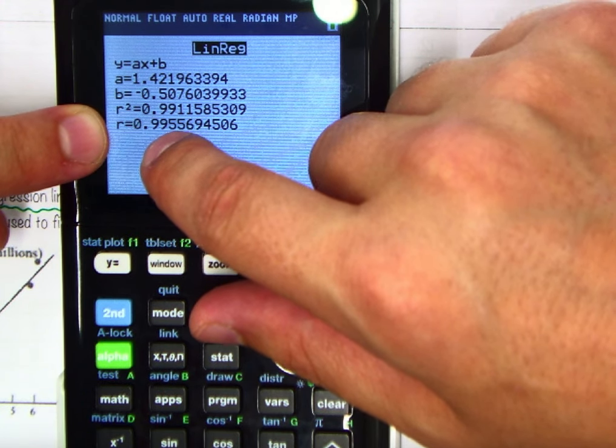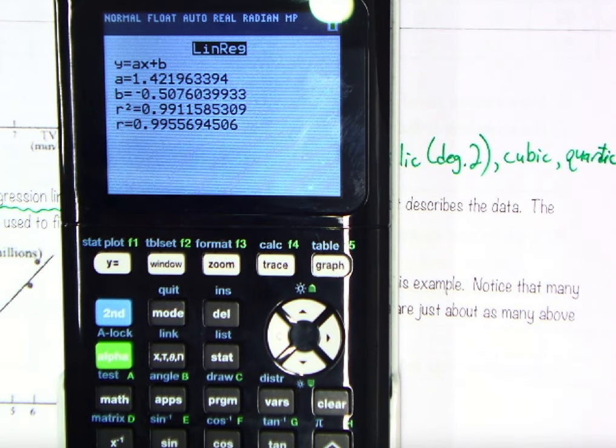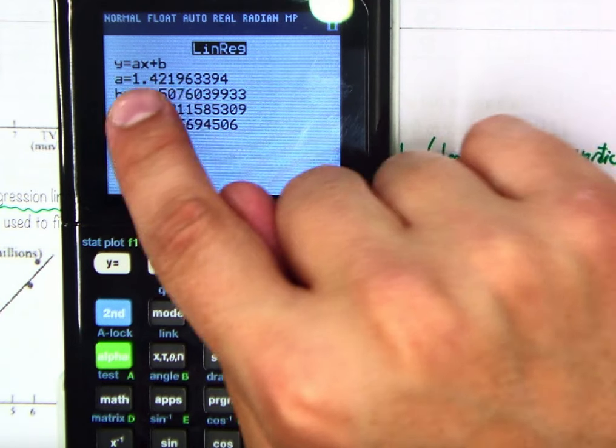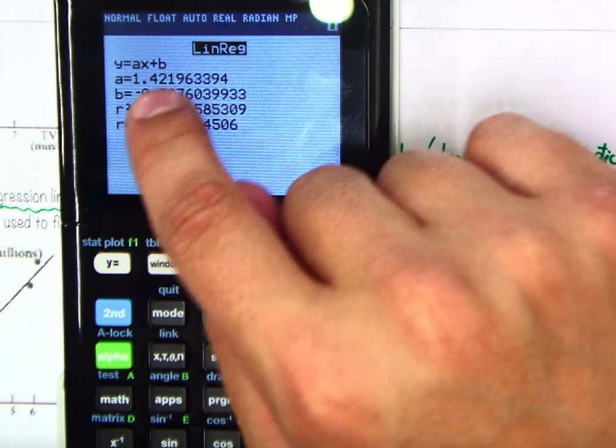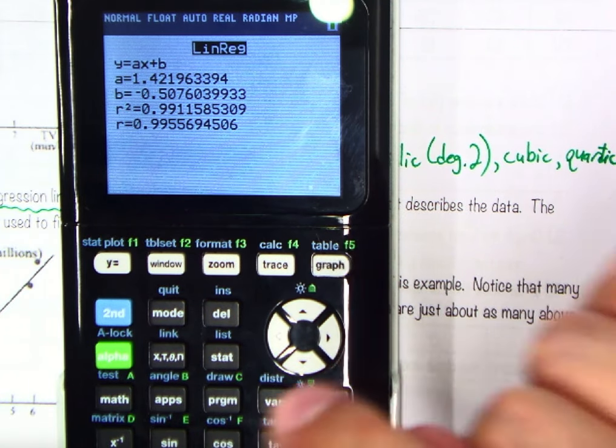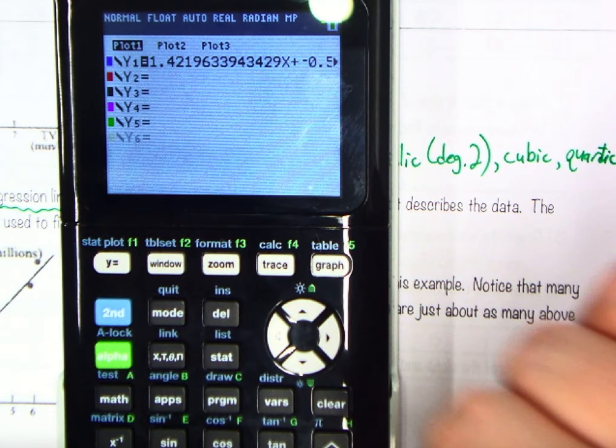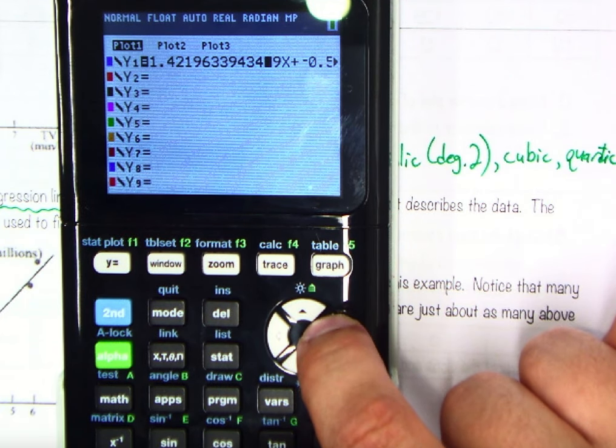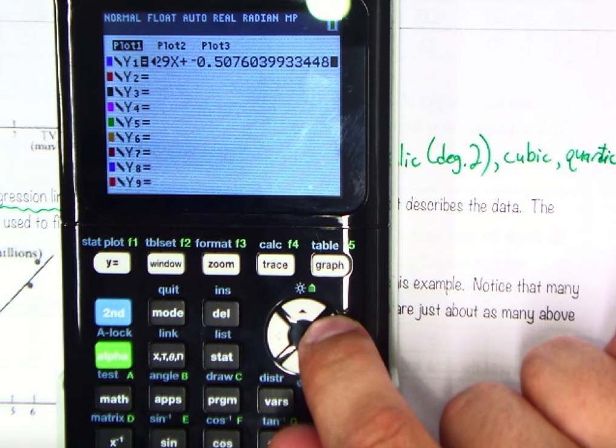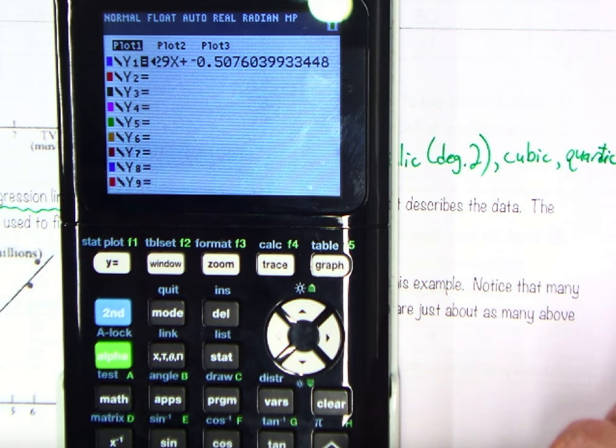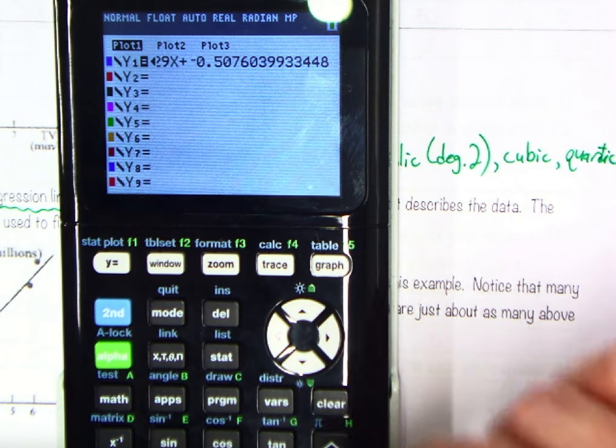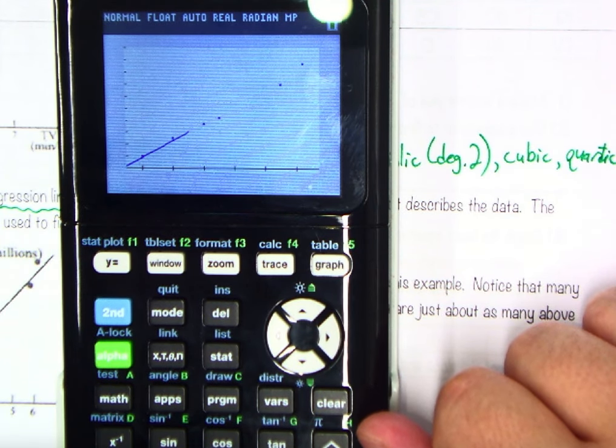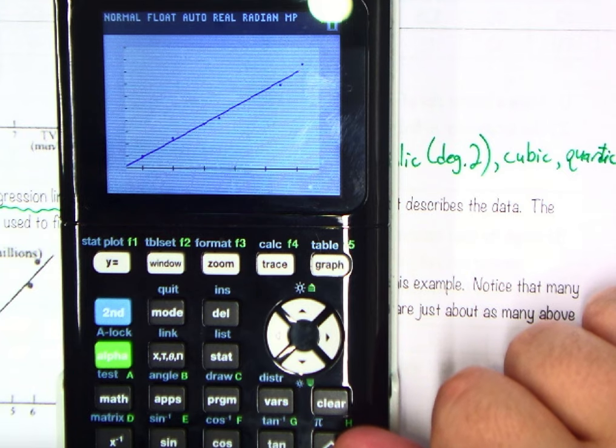So our r value is 0.99556, etc. This is a very strong positive correlation, and again, we'll talk about what that means. This equation, y equals 1.42x minus 0.51 or so, is now stored in our y equals. If I go there, you'll notice the nasty looking decimals have already been entered. Even all the way over, here's your y intercept, all because you already entered it, and that way you don't have to worry about trying to write it down and then copy it on over yourself. Let's just hit graph, and there you have it. So we now have our line of best fit.